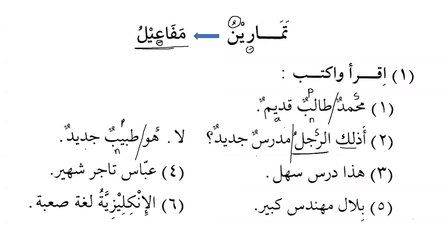Next examples: 'Hadha darsun sahlun' — This is an easy lesson. Hadha is the subject, darsun is the predicate, and sahlun is the sifah. 'Abbasun tajirun shahirun' — Abbas is a famous merchant. These are very simple sentences. Once you know how to make them, you can make many sentences based on the same pattern — it is all about practice.